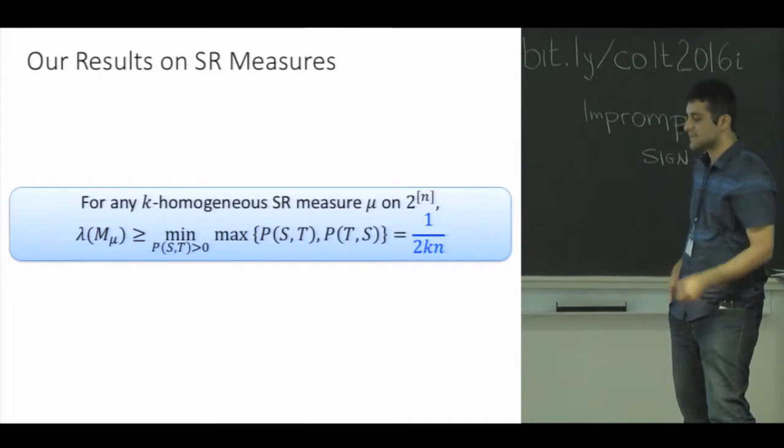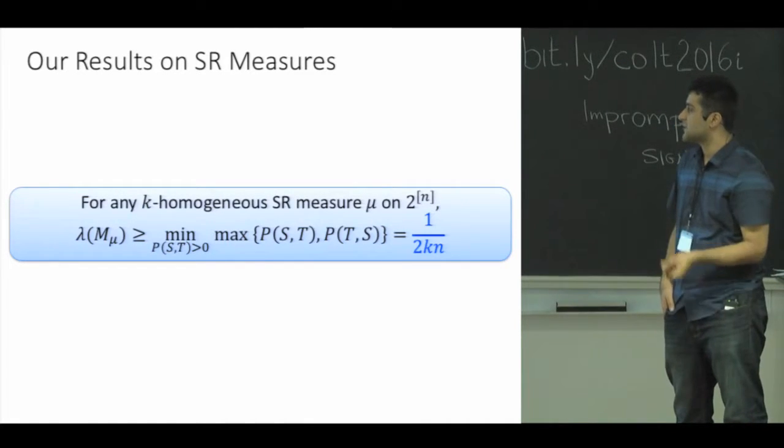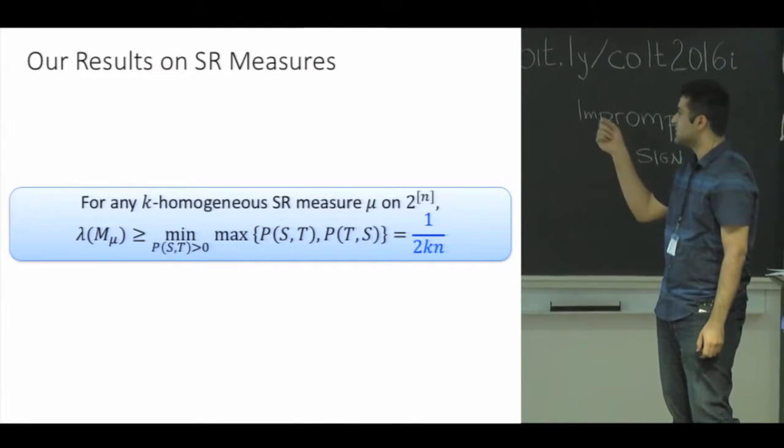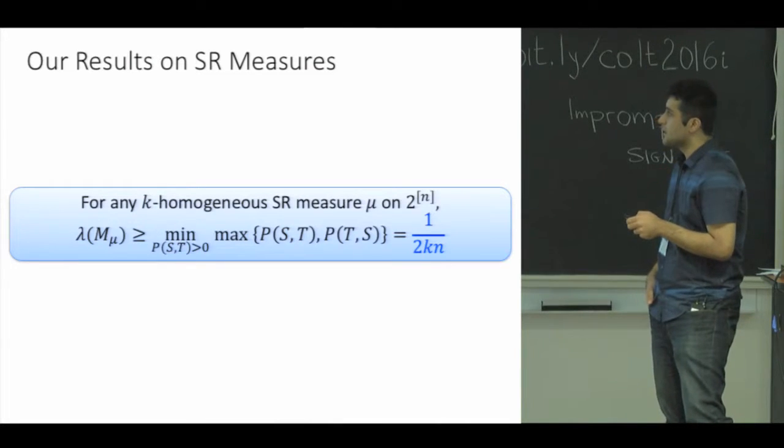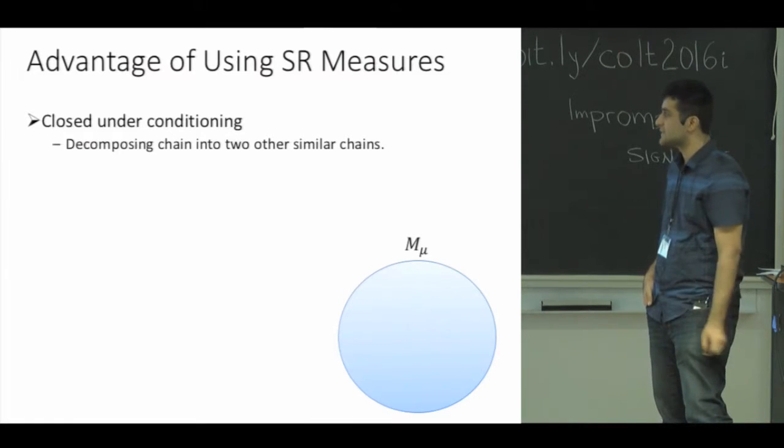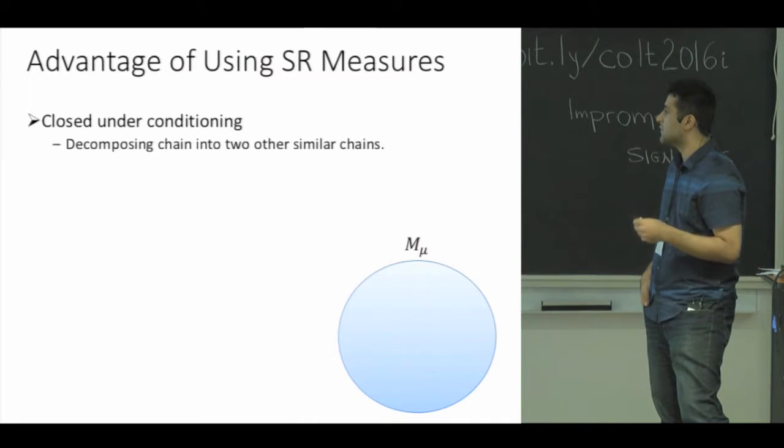Here is our result in terms of SR measures. If you define a chain corresponding to a k-homogeneous SR measure in the same way that we defined it for k-DPP, the spectral gap of the chain would be at least this quantity, which is simply equal to 1 over 2k squared.